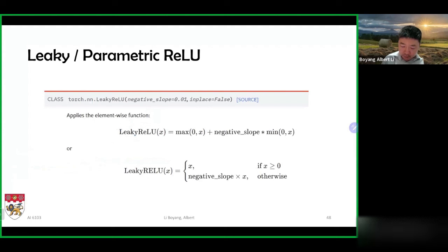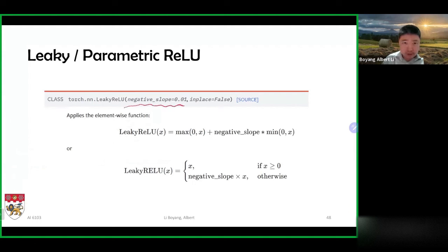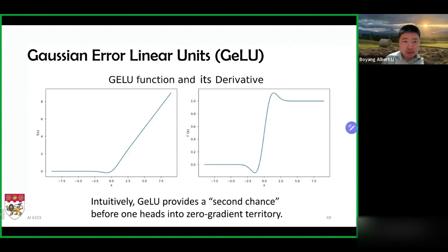It's very easy to do these things with PyTorch, which provides many different activation functions such as Leaky ReLU and allows you to set a negative slope — it doesn't have to be exactly 0.01 but any value you like.